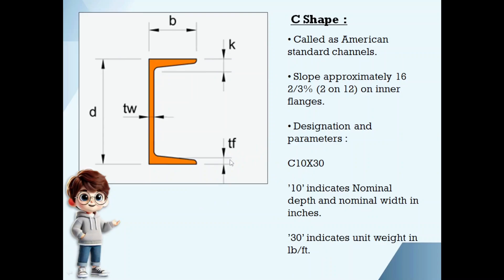C shape. These are called as American standard channels. This inner flange surface is of 2 on 12 slope. If you take C 10 by 30, 10 is the nominal depth and 30 is the unit weight.